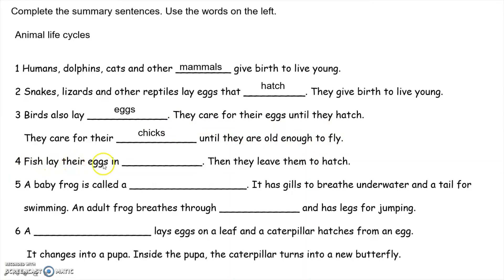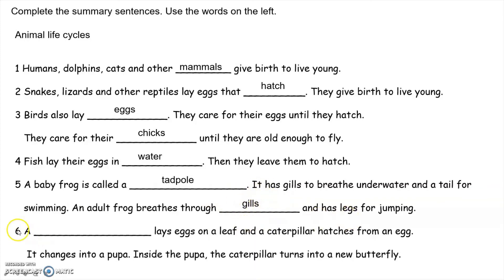Number four: fish lay eggs in water, then leave them to hatch. Number five: a baby frog is called a tadpole. The tadpole has gills to breathe underwater and a tail for swimming. An adult frog breathes through lungs and has legs for jumping. Number six: butterflies lay eggs on leaves. A caterpillar hatches from an egg, changes into a pupa, and inside the pupa the caterpillar turns into a butterfly.